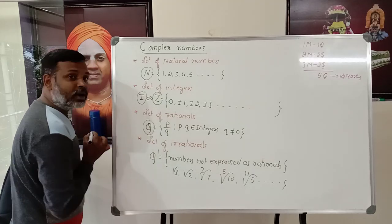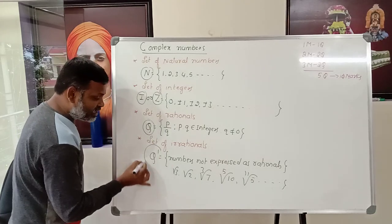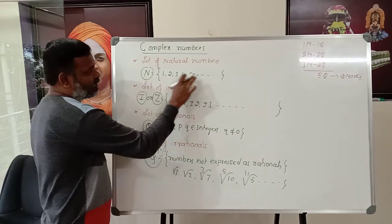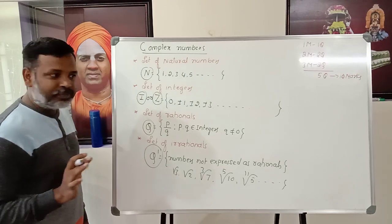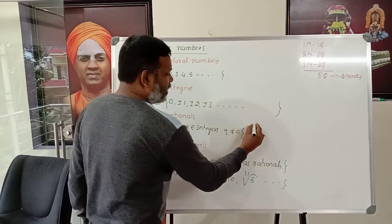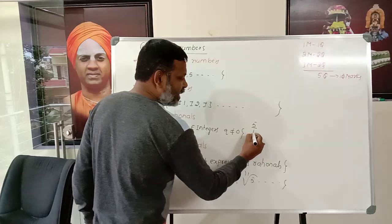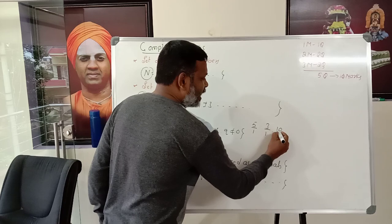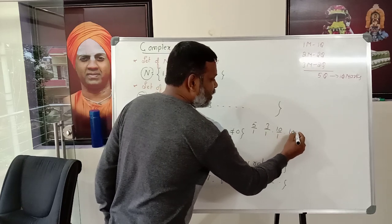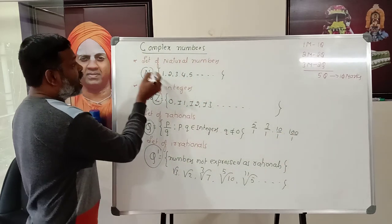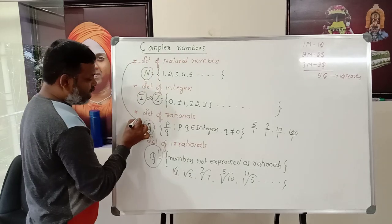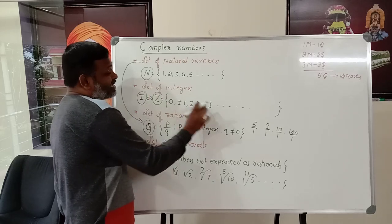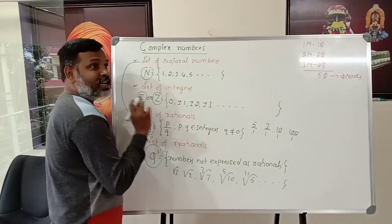To recap the notation: the set of natural numbers is denoted by N, the set of integers by capital Z, the set of rationals by Q, and the set of irrationals by Q′. An important observation: are natural numbers also rational numbers? Yes. For example, 5 can be taken as 5/1, 3 as 3/1, and so on. Therefore, all natural numbers are always rational, and all integers are also rational numbers.